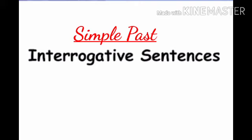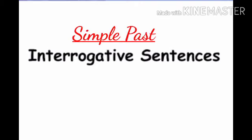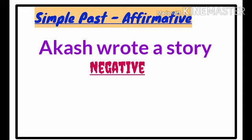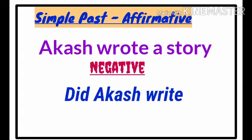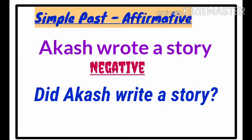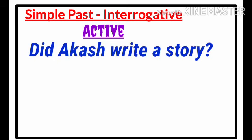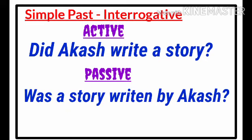Now let's analyze how to make the same sentence interrogative. 'Akash wrote a story' — 'wrote' means 'did + write,' so bring the helping verb 'did' to the beginning: 'Did Akash write a story?' That is a yes/no question. When we change to passive, instead of 'did' we use 'was': 'Was a story written by Akash?'